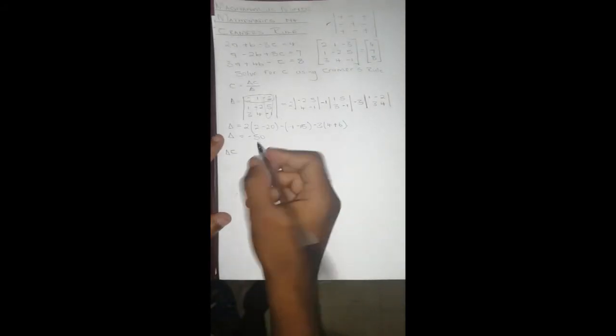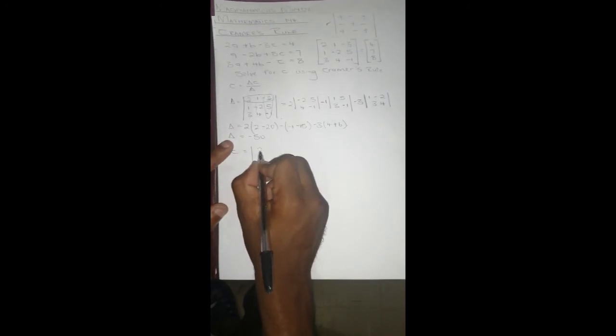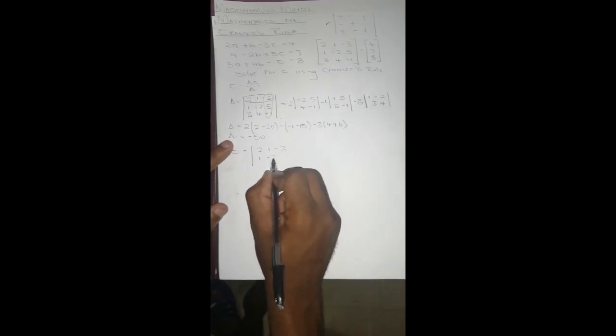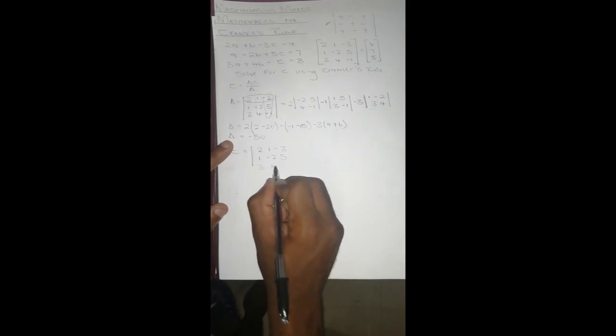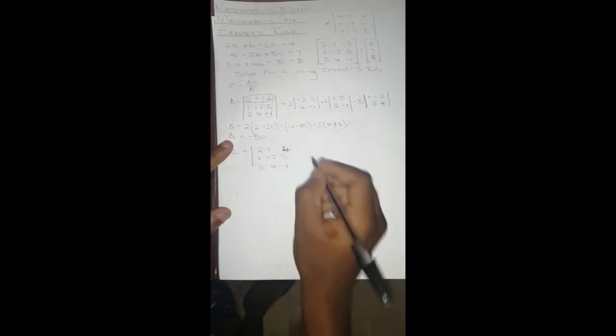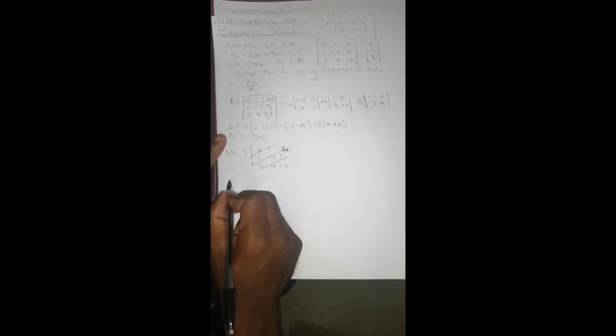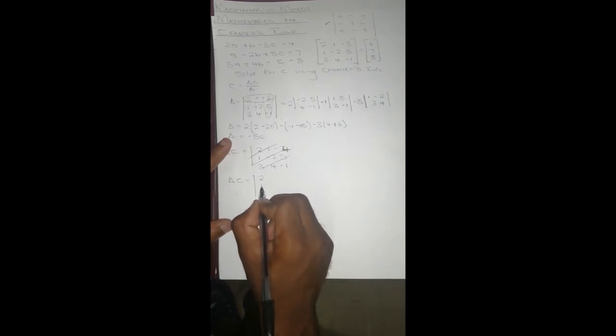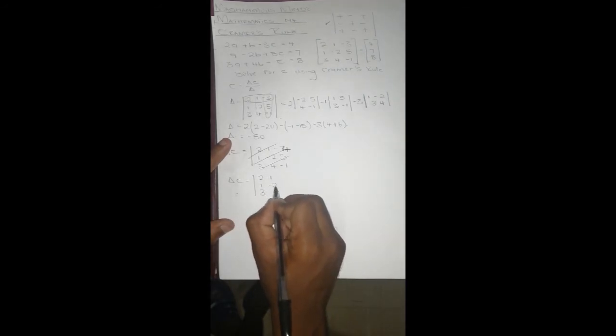Now we calculate the determinant for C. To do this, we substitute the coefficients of C with the constants. So the matrix becomes: 2, 1, 4 in the first row, 1, -2, 7 in the second row, and 3, 4, 8 in the third row.